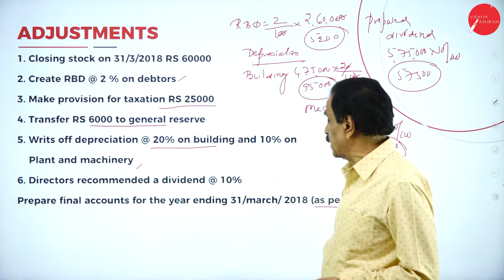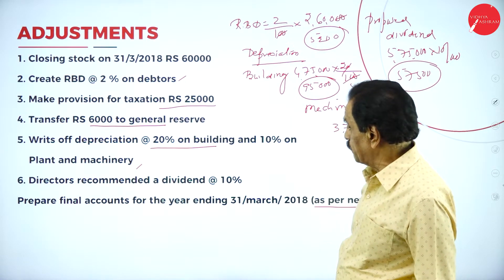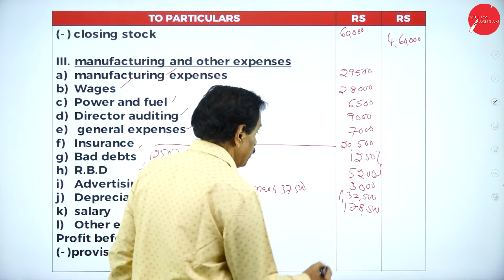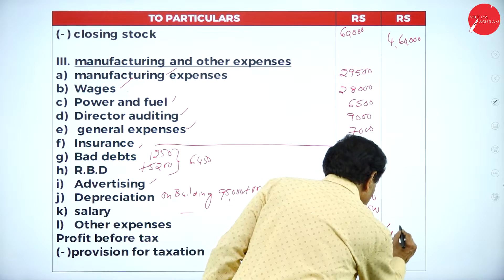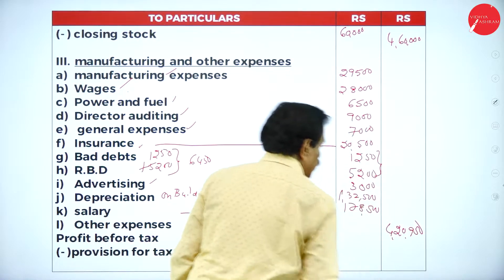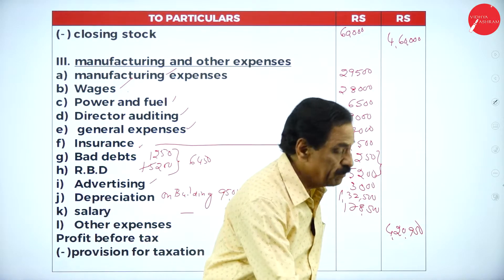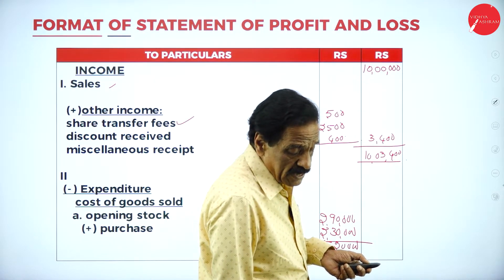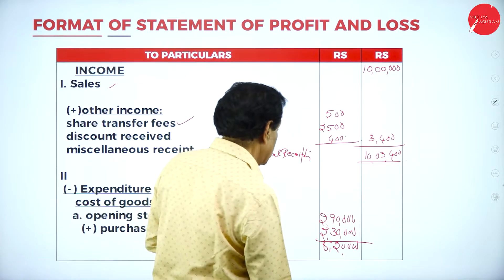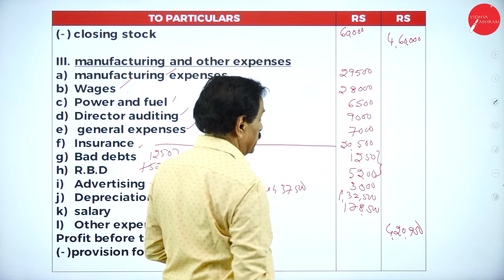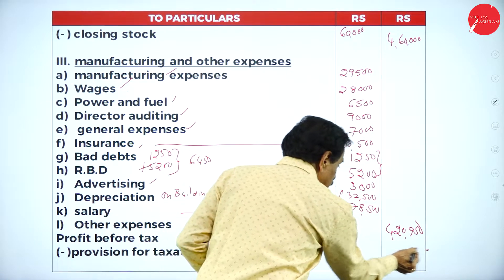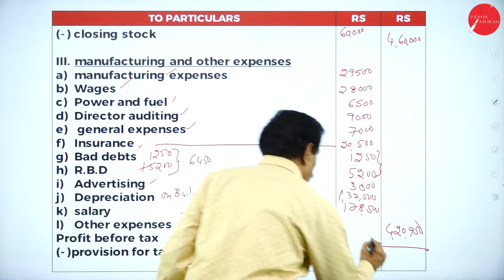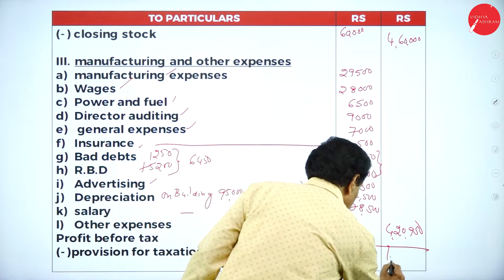Total receipts are ₹10,03,400. Deduct cost of goods sold ₹4,60,000 and total other expenditure ₹4,20,950. The difference is profit before taxation = ₹1,22,450.